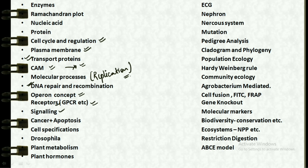Then we have cancer and apoptosis. The next topic is cell specification, which is from the developmental biology unit. Then we have Drosophila, which is very important — you can easily find questions from this area, and the frequently repeated area within it is from the mutation cases.